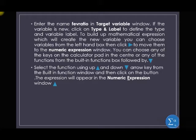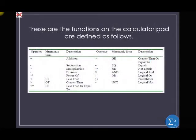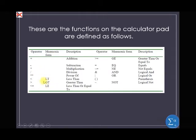The expression will appear in the numerical expression window. These are the operators available in the calculator pad — some are in mnemonic form like LT (less than), GT (greater than), and LE (less than or equal to). In the beginning of this course, I mentioned that LT, GT, and LE are names you cannot use to define a variable, and this is the reason — they are reserved functions in SPSS.